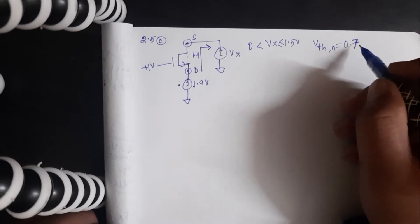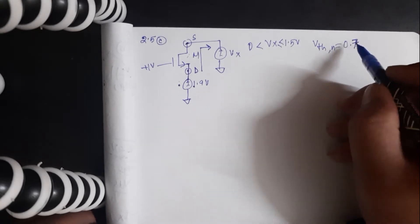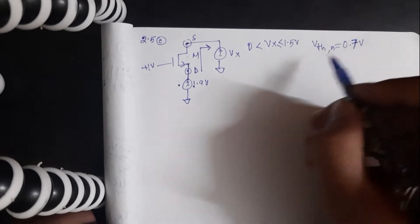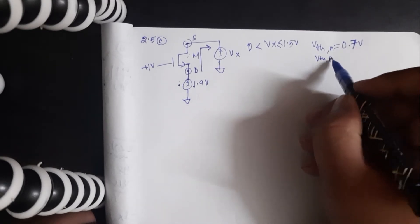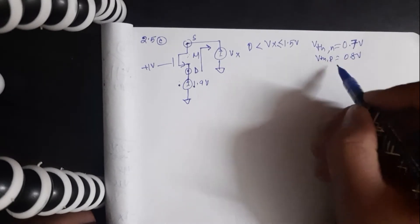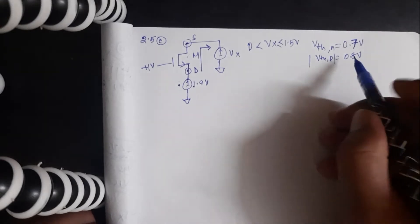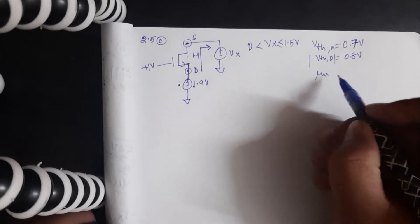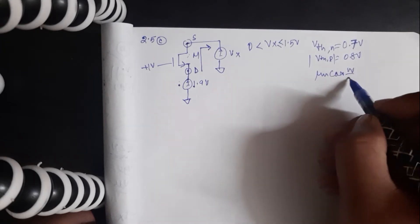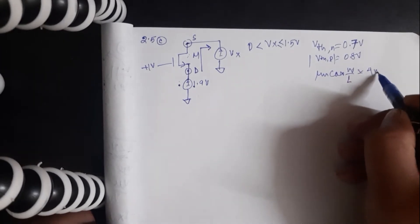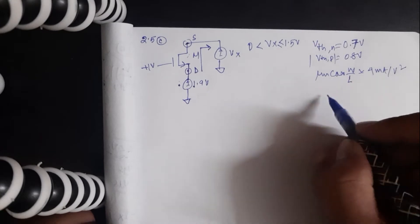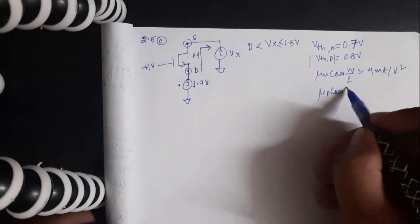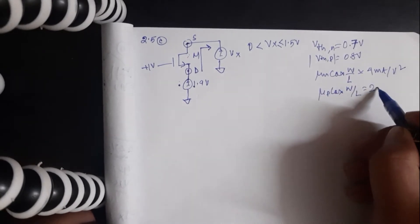Before doing that, let me reiterate all the process parameters that were used in the previous questions. Threshold voltage is 0.7, for PMOS it's 0.8. mu_n * Cox * W/L is 4, mu_p * Cox * W/L is 2.